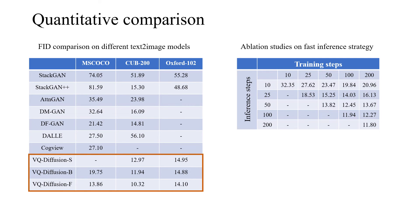We provide the ablation studies on fast inference strategy in the right table. We find it still has good performance when dropping 75% inference steps, which may save about 75% inference time.